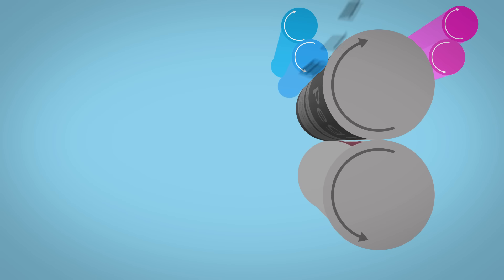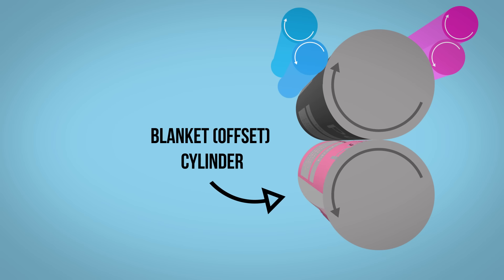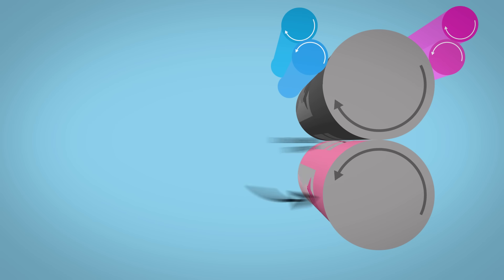This image is then offset onto another cylinder with a rubber blanket. The addition of this process results in a clearer and sharper final image, and is where offset printing gets its name.